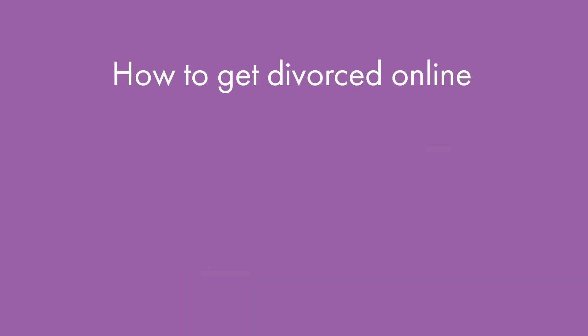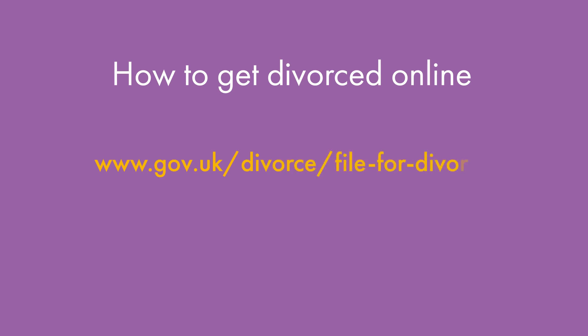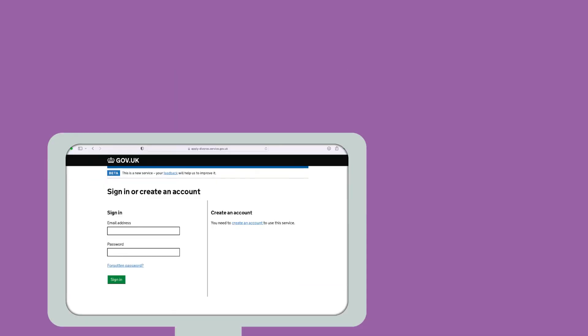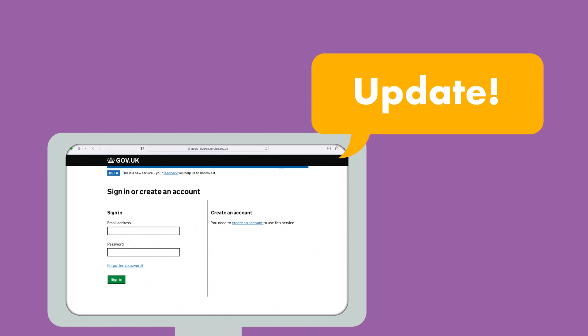You can apply to get divorced online at the government website www.gov.uk/divorce/file-for-divorce. You can apply to dissolve your civil partnership at www.gov.uk/end-civil-partnership. The process for both is the same. The portal allows you to make applications at all stages of the divorce or dissolution, as well as providing updates at each stage.